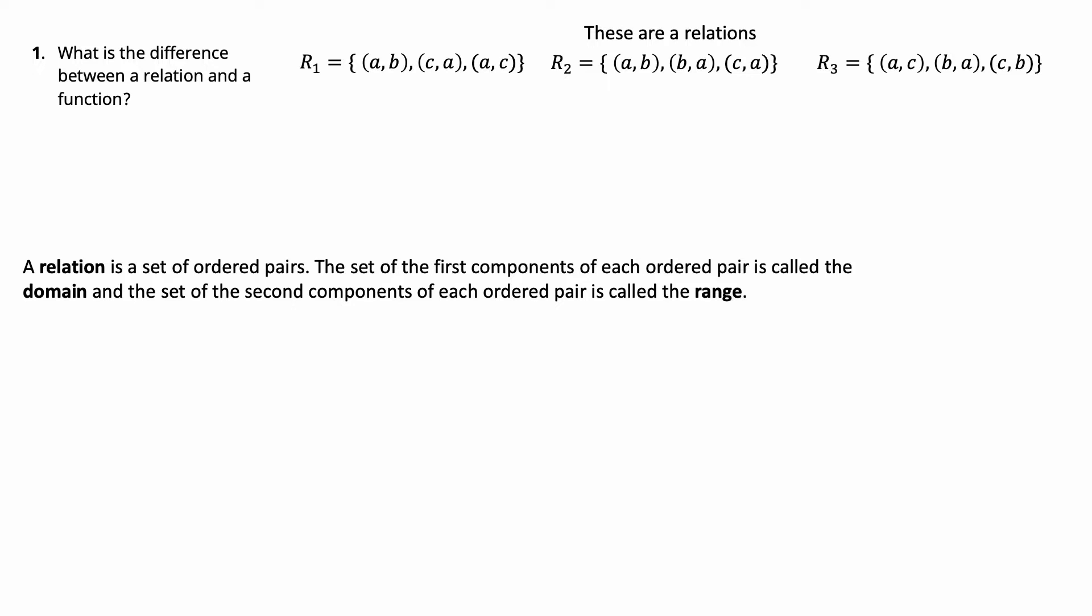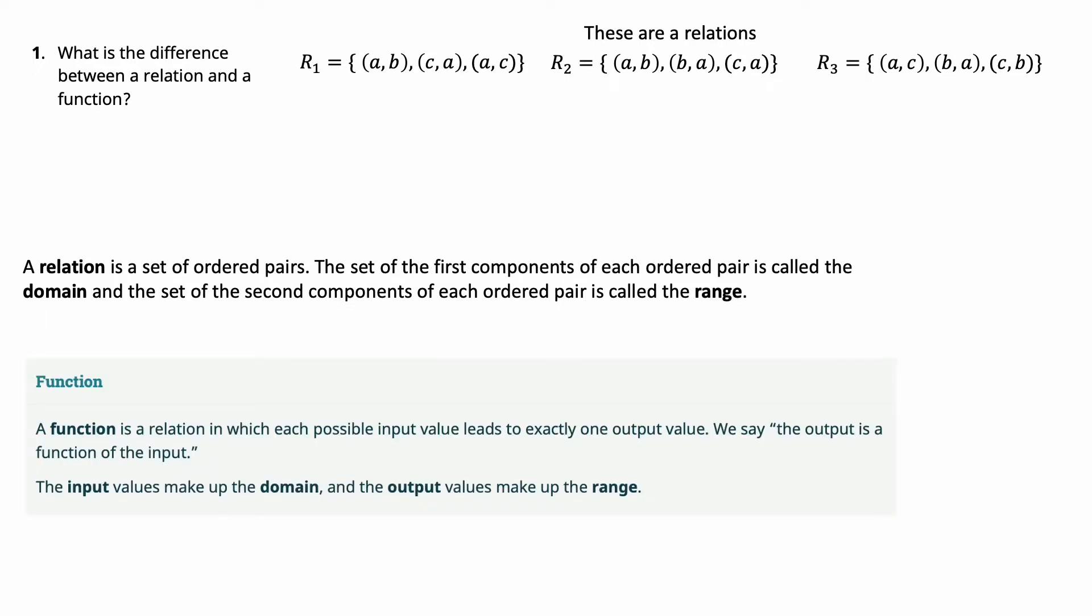Now what makes a relation a function is that all the first variables are different, all the inputs are different, that will make it a function. So notice that in the first one you have two inputs that are the same but different outputs, therefore this is not a function. Where in the second two all of them are different, all the inputs are different, so that means that we know we have a function.